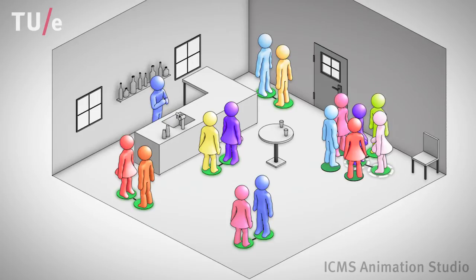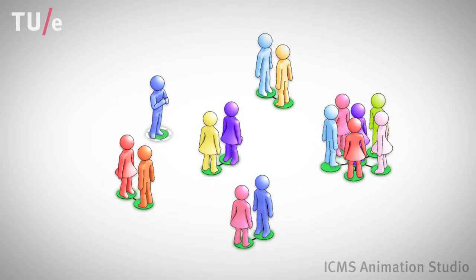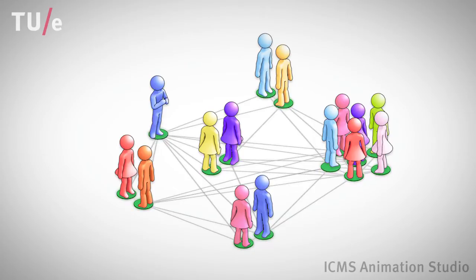Such friendship networks are an abstract way to view the social interactions between people. A more abstract way to visualize this network is by drawing circles representing the people and connecting them by lines representing the friendships.